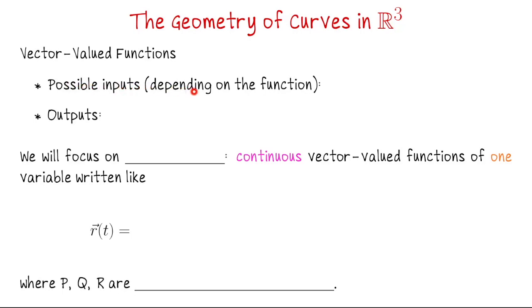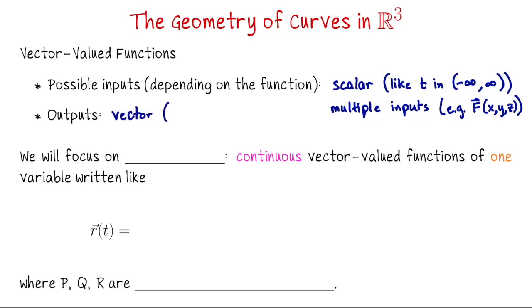So for a vector-valued function, the possible inputs could be a scalar, like t for example, or you could take in multiple inputs, so you could be looking at a function of say x, y, and z. You could have either one input or multiple inputs. What makes it a vector-valued function is that the output is a vector. For us, this will usually be in R² or R³. That's the etymology of the phrase—it's a vector-valued function, a function which returns values that look like vectors, as opposed to scalar-valued functions where the output is just a number.